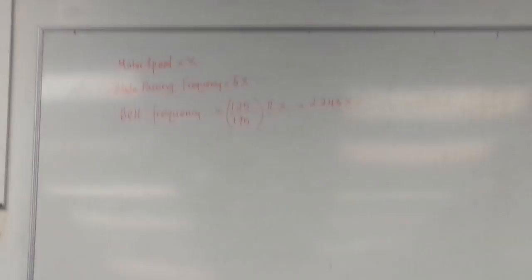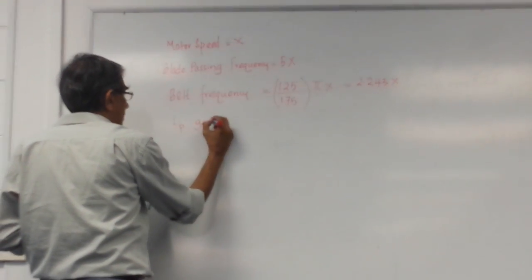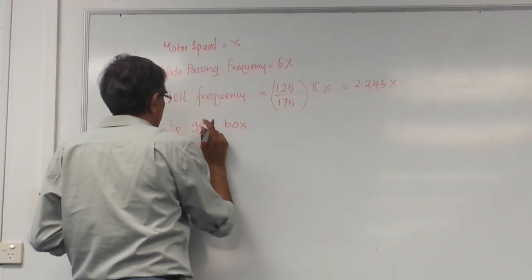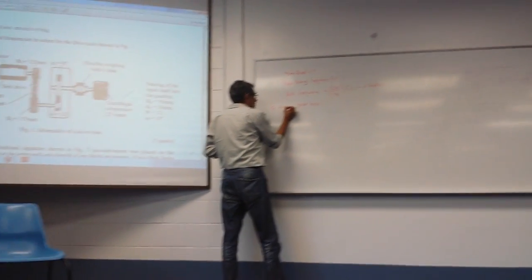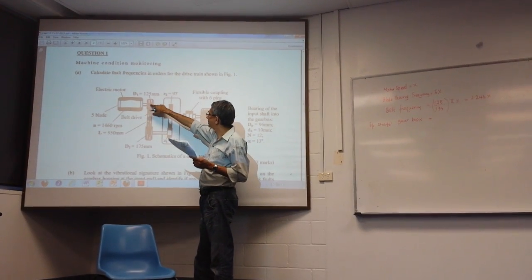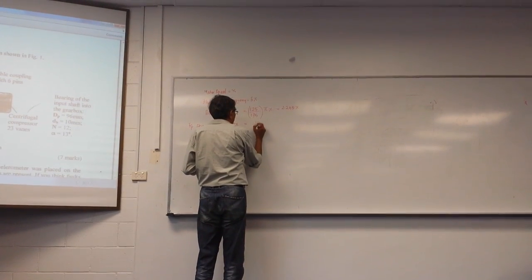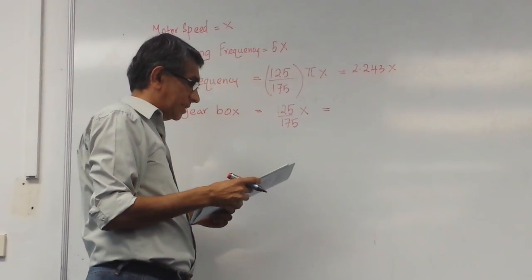Then another thing is, if you have a belt drive, then you can calculate the shaft speed. That is the input for the gearbox. It is equal to the diameter ratio — 125 divided by 175 times x. Without pi, how much is this one? 0.714x.